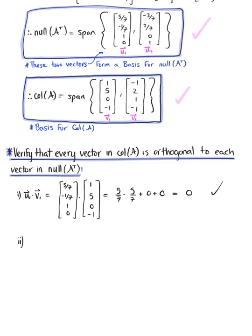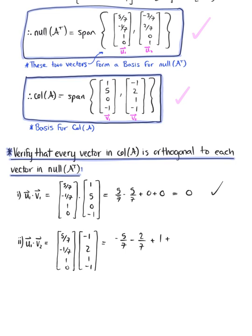Case 2: compute the dot product of u₁ with v₂. We have (5/7, -1/7, 1, 0) dotted with (-1, 2, 1, -1). Computing: -5/7 - 2/7 + 1 + 0 = -7/7 + 1 = 0.